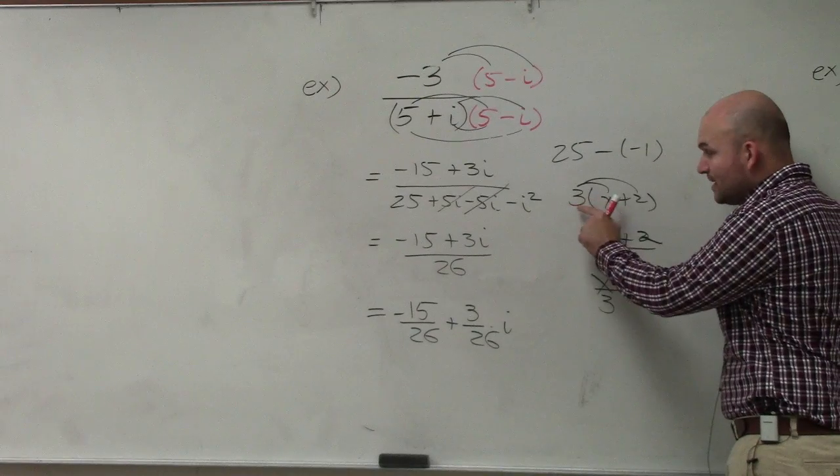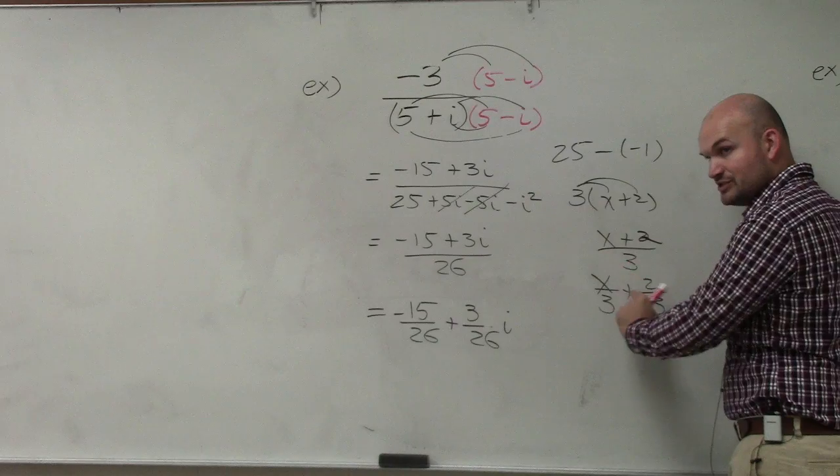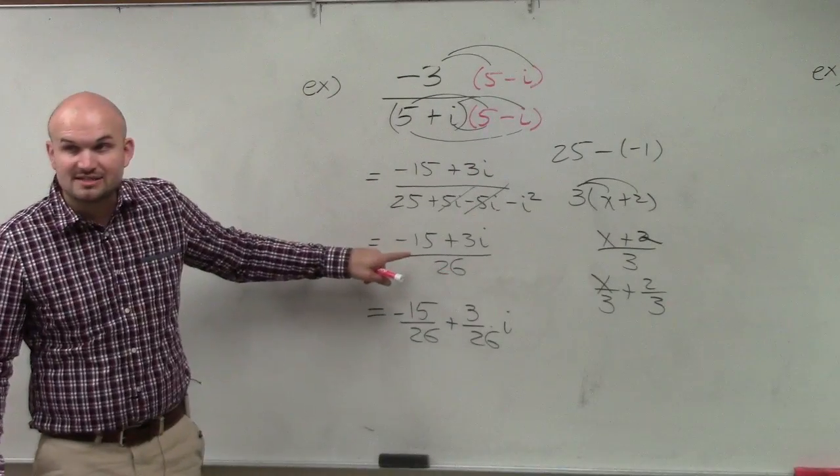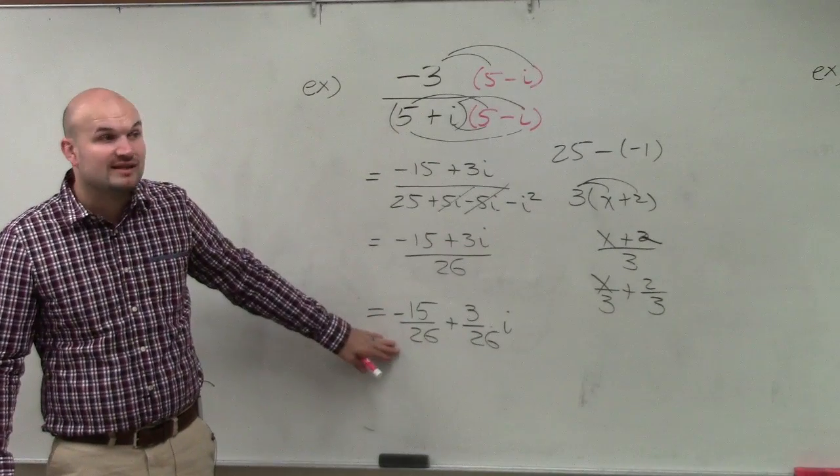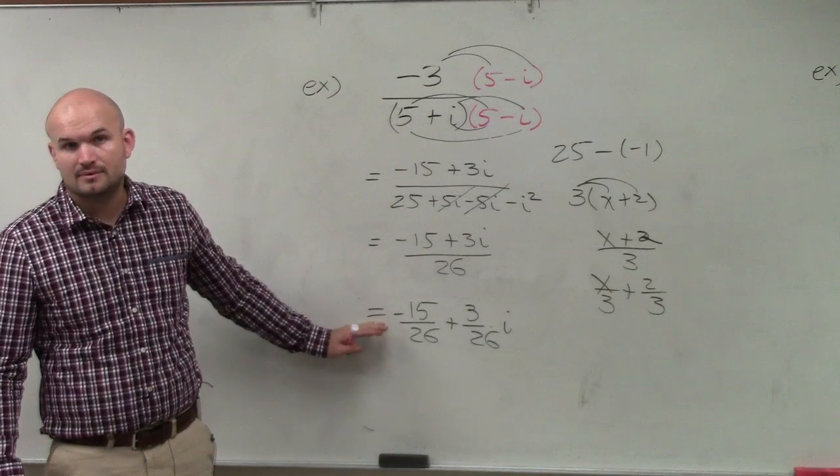Same thing. When you multiply a number times an expression, you apply distributive property. This is like distributive property though with division. So therefore, over here, the 26 divides into the negative 15, and the 26 divides into the 3i. Now I can't simplify these fractions, but if you have fractions to simplify, you'd want to do that.